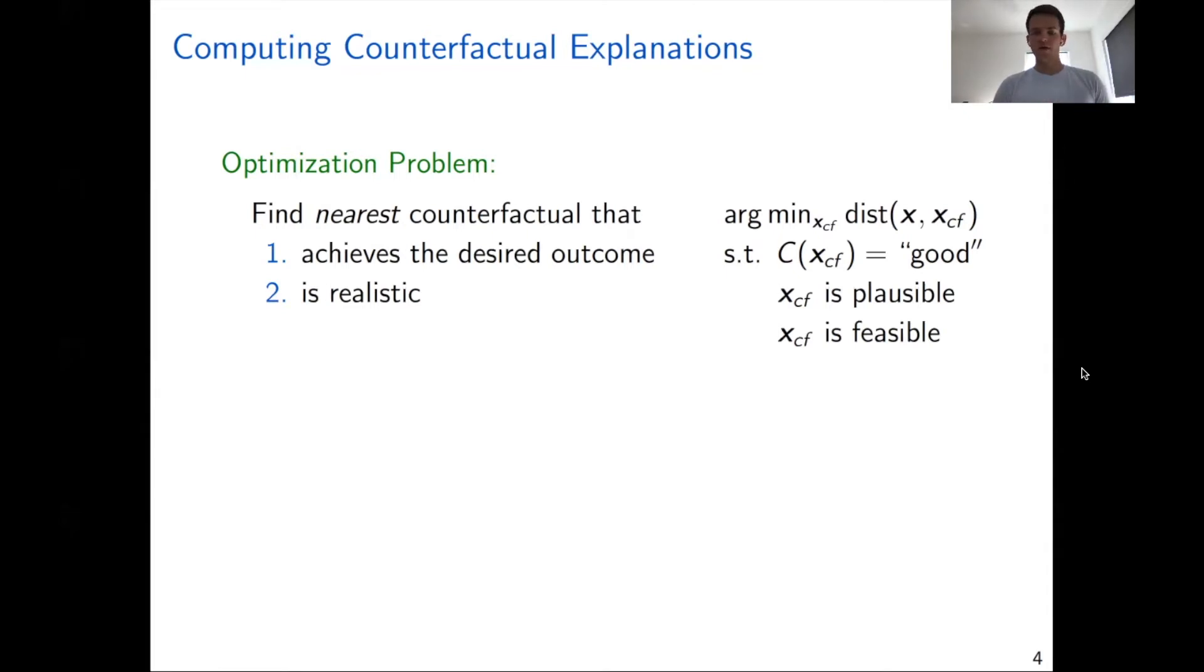There are two main challenges in this optimization problem. Even though it's easy to define, it's not necessarily easy to compute. The first question is, how do we even define these constraints that encode the plausibility and the feasibility of the counterfactual? The second problem is that this minimization problem encodes a huge search space, and so finding the best counterfactual explanation is really non-trivial.